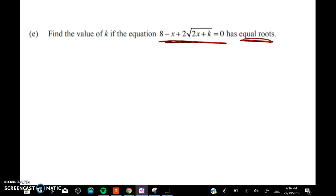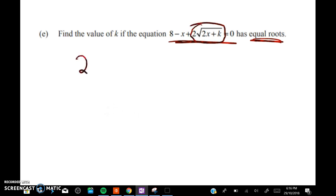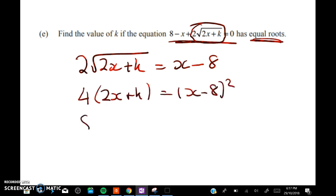So I'm going to make sure that I've got my surd isolated on one side, so we have 2 root 2x plus k is equal to x minus 8. Now I like that because I can square both sides to eliminate the surd, and we'll get 4 times 2x plus k is equal to x minus 8 squared, 8x plus 4k equals x squared minus 16x plus 64.